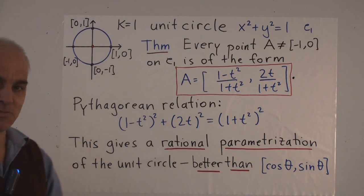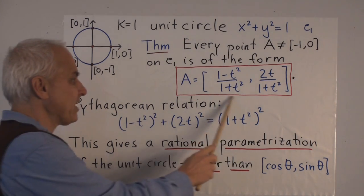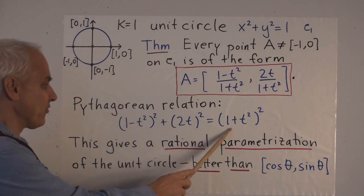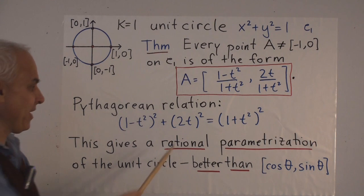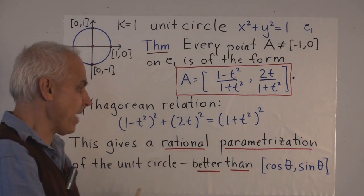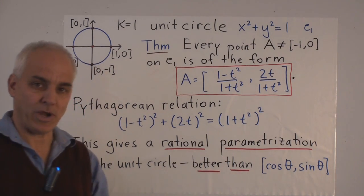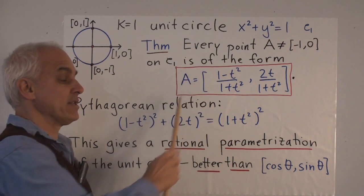Naturally connected with this parametrization is this identity or relation: if you take (1-t²) and square it, and take 2t and square it, and add them, then you get exactly (1+t²)². This rational parametrization of the unit circle is very useful and important.